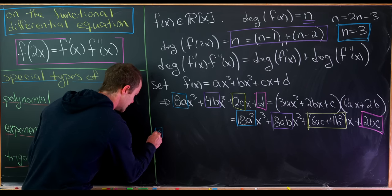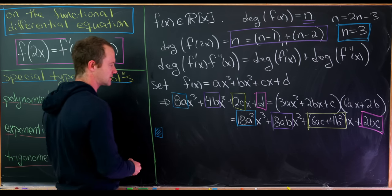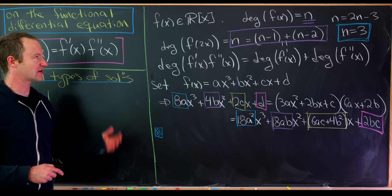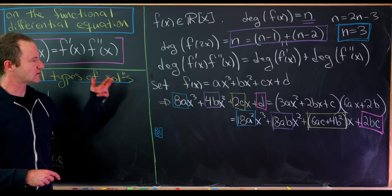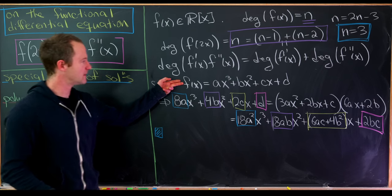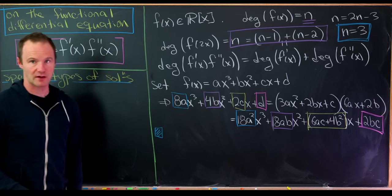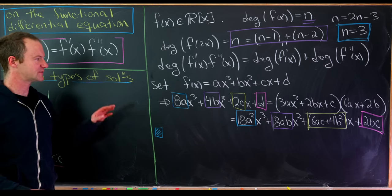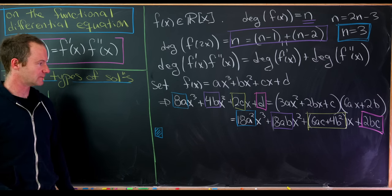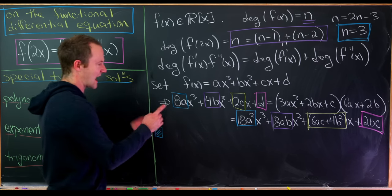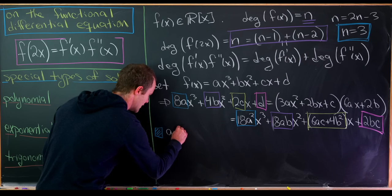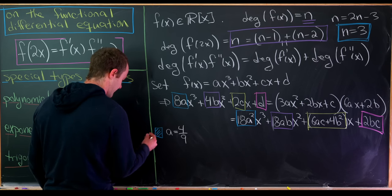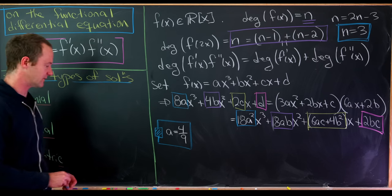From 18a² = 8a: since a ≠ 0 (otherwise f wouldn't be degree 3), we can divide by a and get a = 4/9. That's our first coefficient.